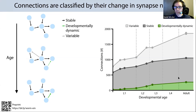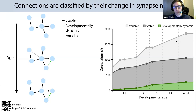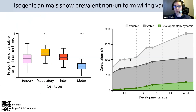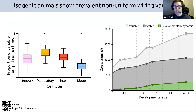These variable connections are surprisingly common. Variable connections make up about half of all connections in the adult connectome, contrasting with the widely held view that the C. elegans connectome is hardwired. These variable connections are not randomly distributed throughout the brain: variable connections are most common among modulator neurons and least common among motor neurons. The high stereotypy of synapses for motor neurons may reflect a requirement for high fidelity in motor execution circuits, while modulatory neurons may have the weakest requirement for precise synapse positioning because they often exert long-range effects via monoamines and neuropeptides.